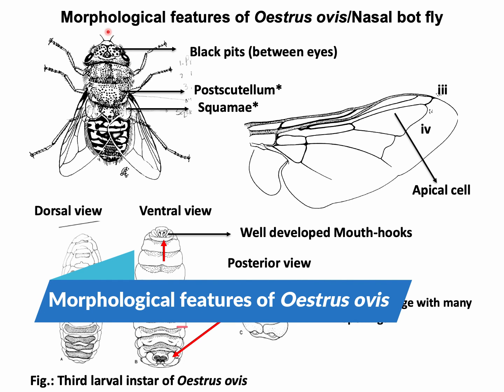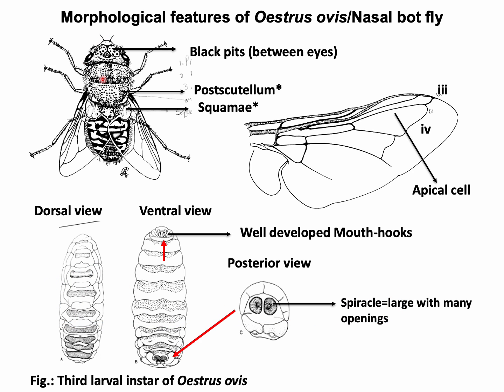Morphological features of Oestrus ovis or nasal bot fly: Oestrus ovis are bee-like flies, gray in color, around one centimeter in length. The eyes are spaced and located in a large intraocular space. Black spots are present; the post-scutellum is distinct and squamae are large. Each wing has an apical cell closed by vein four joining vein three before the wing margin. Legs are yellow in color. Larvae are yellowish-white in color; mature larvae can be around three centimeters in length with well-developed mouth hooks and posterior spiracles bearing numerous small openings.